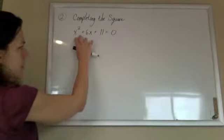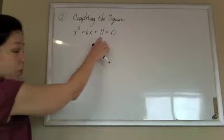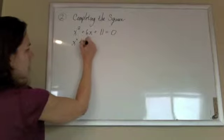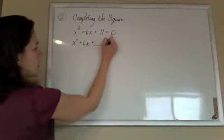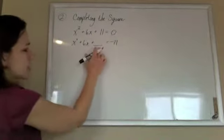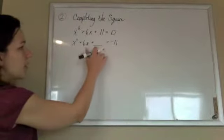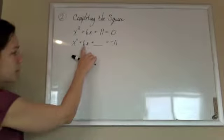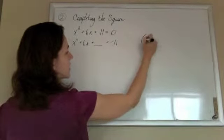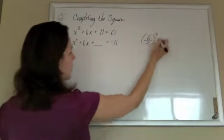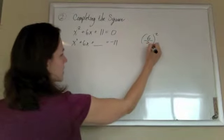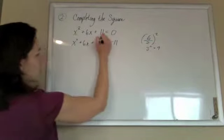We want to make this a perfect square. This 11 is doing us no good at all, so we're going to toss him over to the other side, and I'm going to put something in his place to make this a perfect square. The number I'm going to put here is half and square that middle number. We're going to take 6 and divide it by 2 and square it. So take that middle number, half it, square it, so that's 3 squared, so 9.